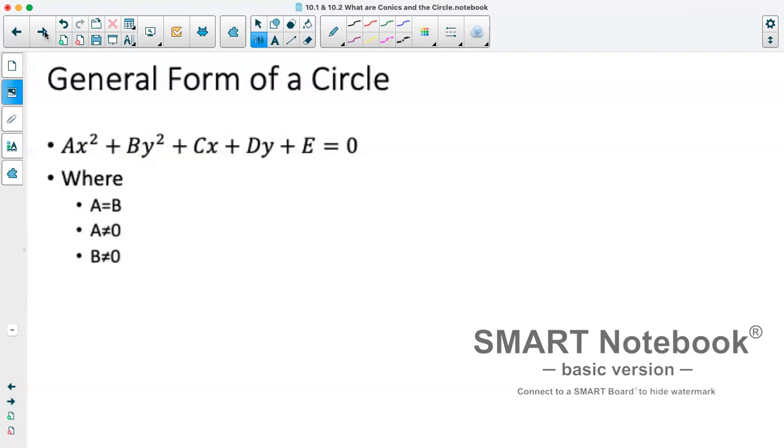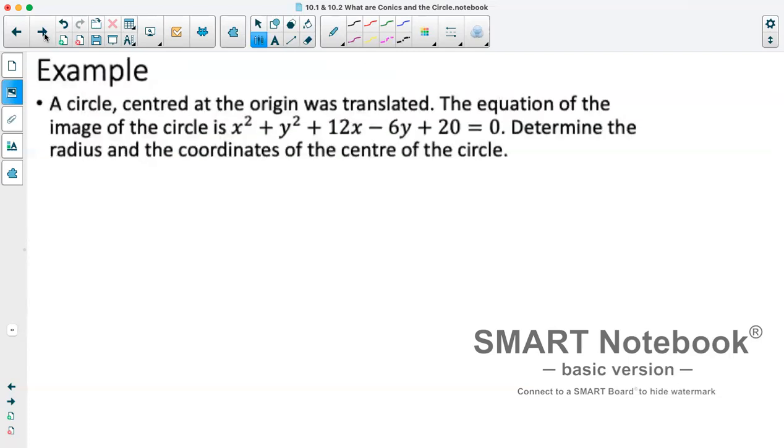So we'll do an example of general form. The circle centered at the origin was translated. The equation of the image of the circle is x squared plus y squared plus 12x minus 6y plus 20 equals 0. Determine the radius and the coordinates of the center of the circle.